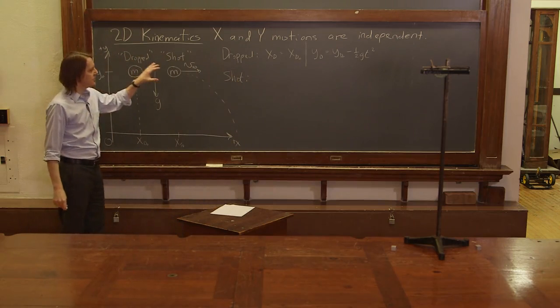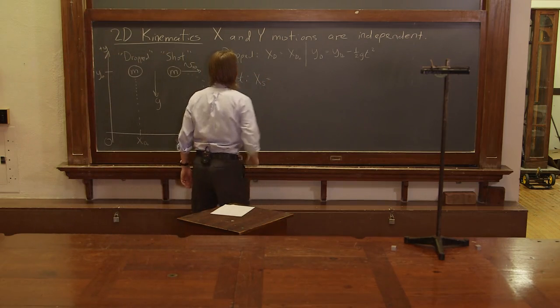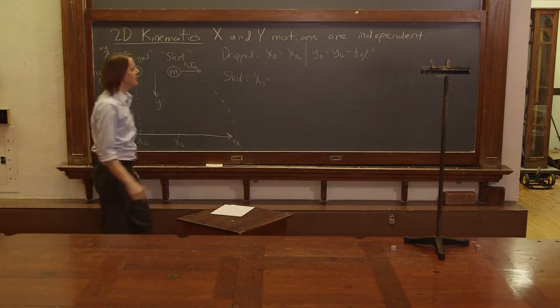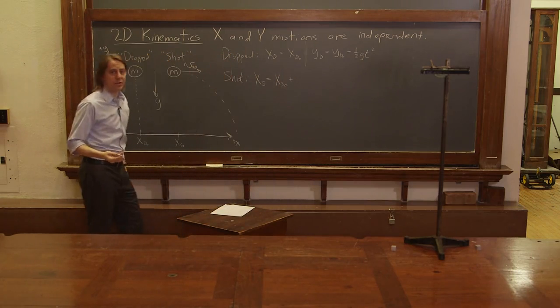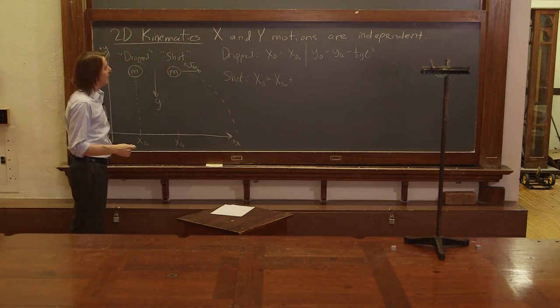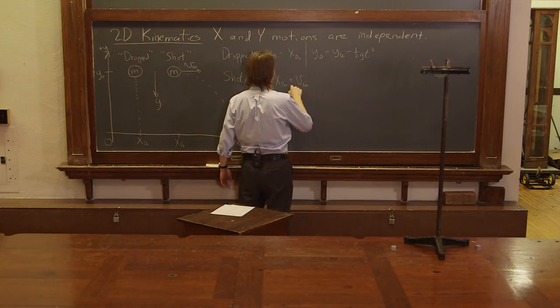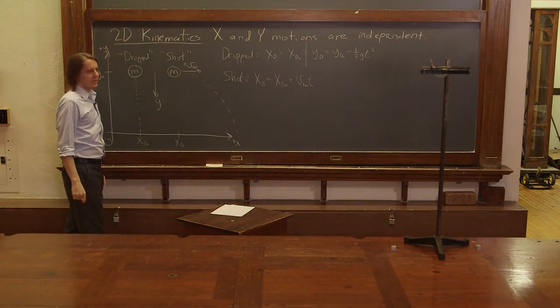The X position of shot, X S, is equal to what? Well, it does have an initial X position, X S-naught. And does it have an initial X-velocity? Yes. So that's V X-naught T - that's the standard kinematics equation. Plus in the X-direction, does it have an acceleration? No, it does not. There's no gravity this way.